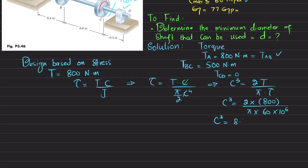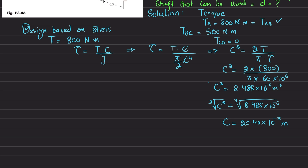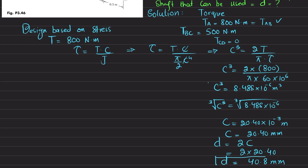Calculating, c³ = 8.48 × 10⁻⁶ m³, giving c = 20.40 × 10⁻³ m, or c = 20.40 mm. Since diameter d = 2c, the required diameter based on shear stress is d = 2 × 20.40 = 40.8 mm.